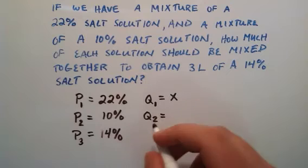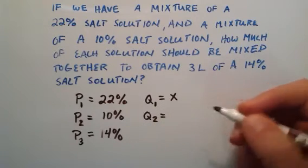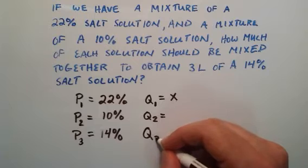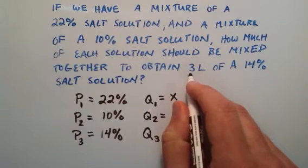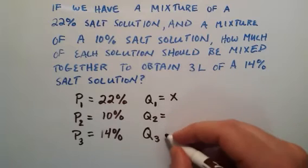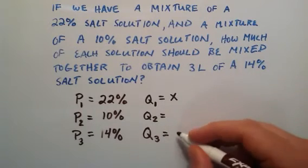Let's wait on quantity two for a second and move on to quantity three. This is going to be the end result, and we know that we need to have a total quantity of three liters, so Q3 is equal to 3.